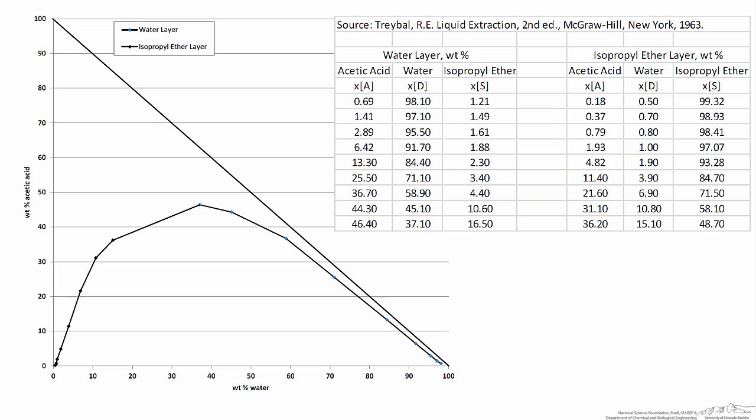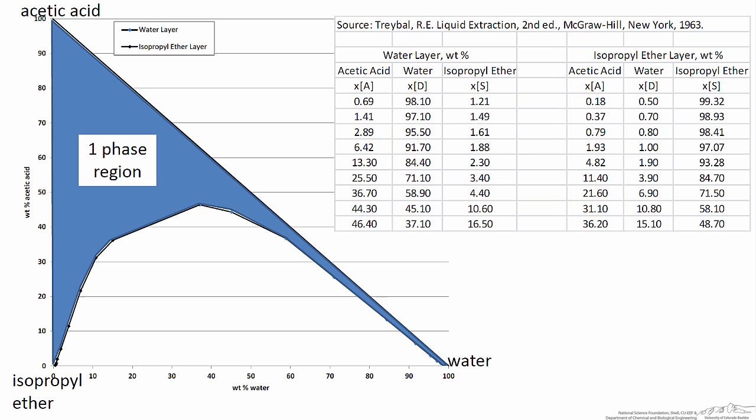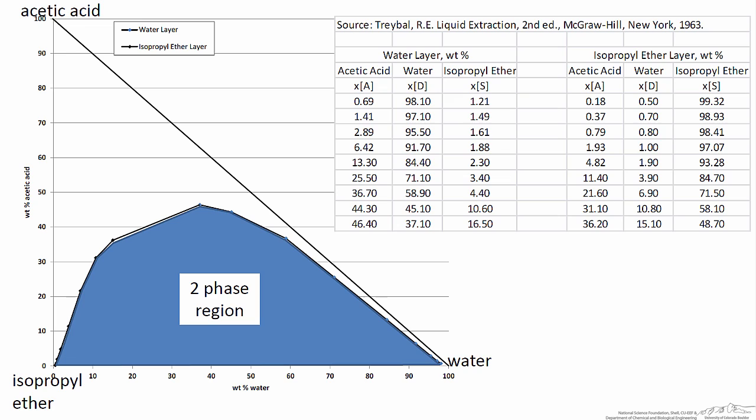We can add to this diagram the components associated with each corner of the diagram, and also the diagonal line connecting 100% acetic acid and 100% water. Here we can see compositions that would result in a one-phase system, or other compositions that would result in a two-phase system. It's this two-phase region that's typically useful for liquid-liquid extraction.